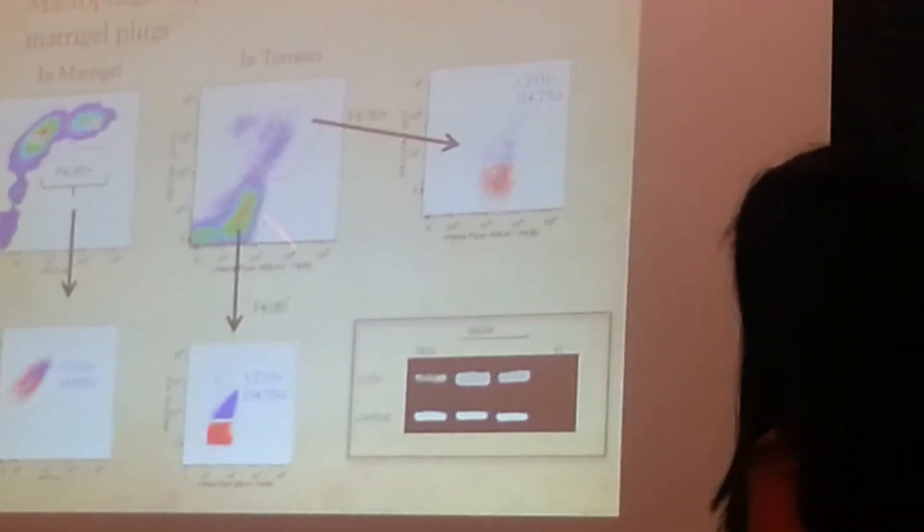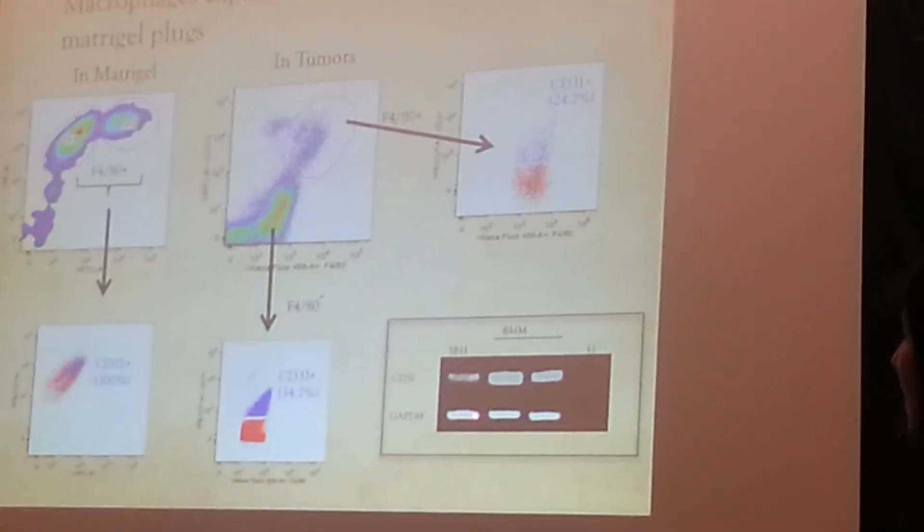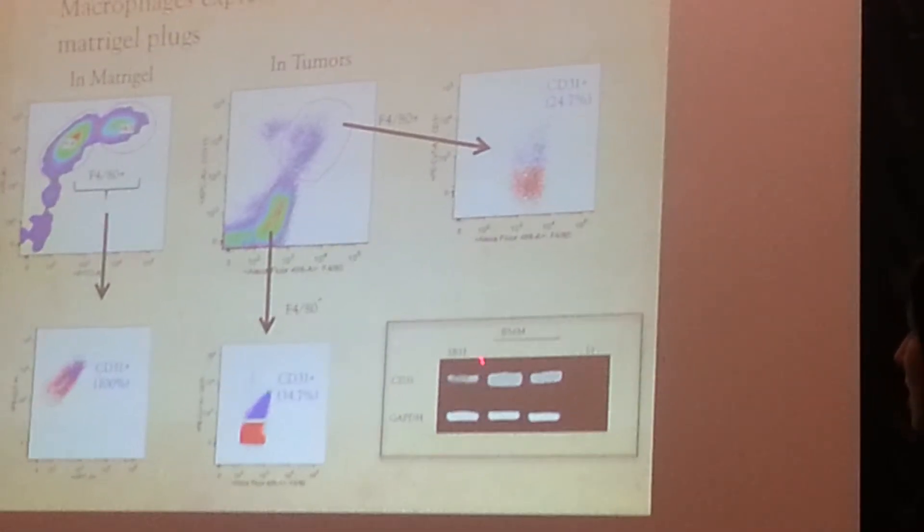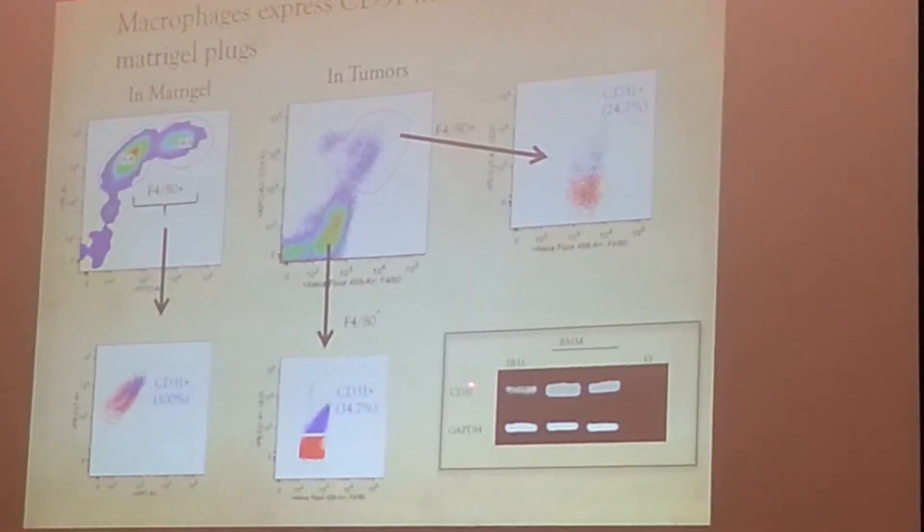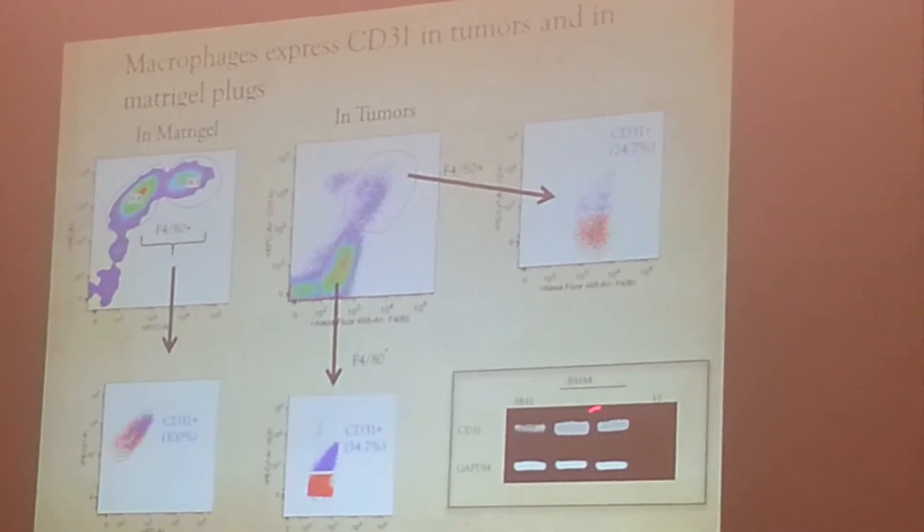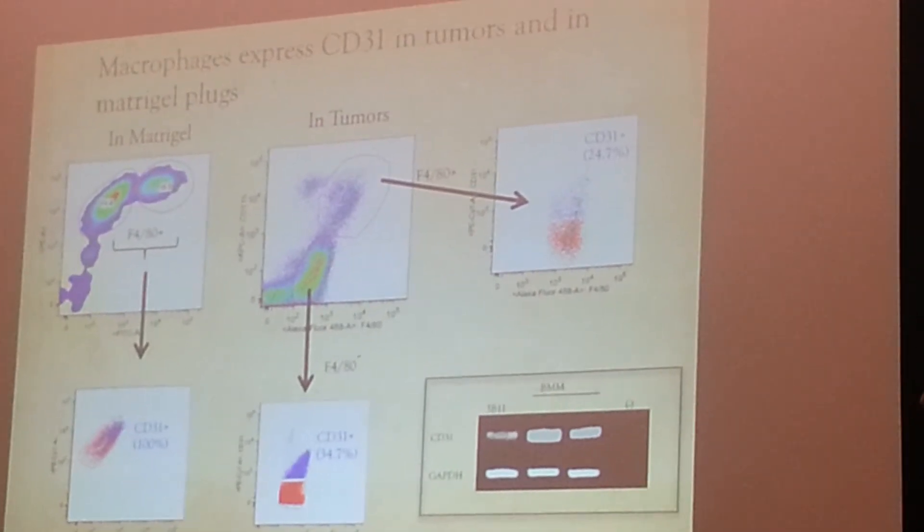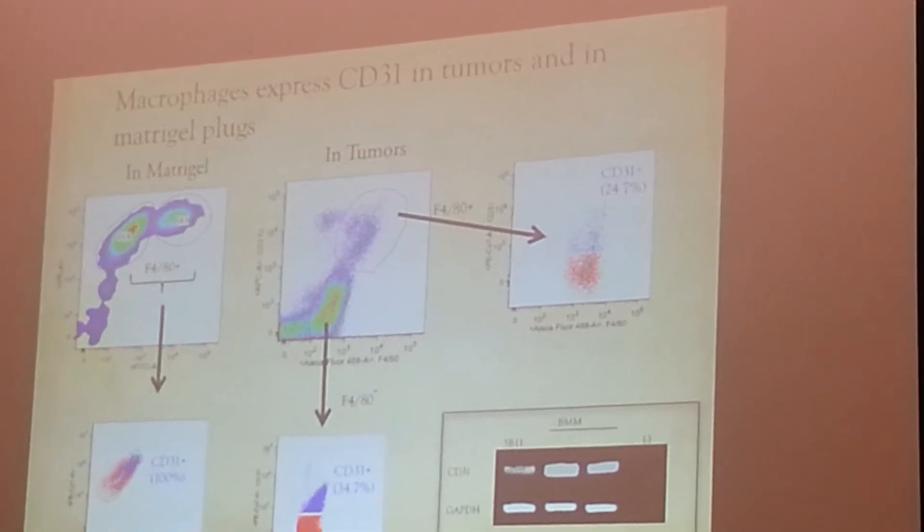I wanted to check this result by doing a PCR for CD31. This is 3B11 endothelial cells, I used as a positive control, and two kinds of bone marrow macrophages, and you can see a higher expression of CD31.